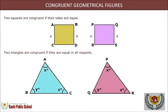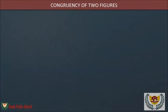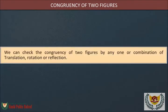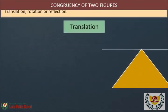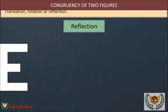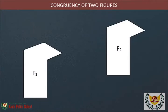Congruency of two figures: We can check the congruency of two figures by any one or combination of the following transformations: translation, rotation, or reflection. Translation means moving without rotation.